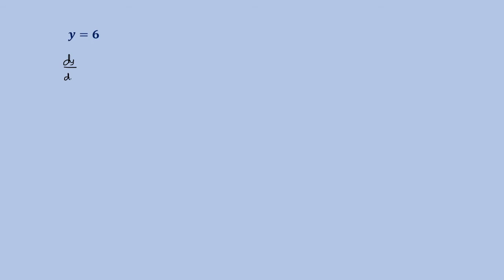Let's say you would like to get the derivative of 6. Since 6 is a constant, the derivative is equal to 0. If you would like to show the solution, the derivative of y with respect to x — using the derivative operator — is 0.